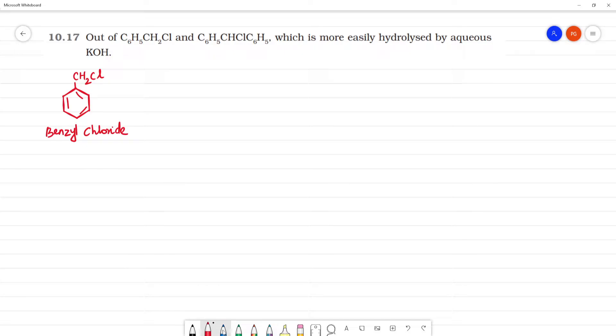Next, C6H5CHCl - here the carbon has one aryl group. Then we have an H and a Cl. So how do we classify this? This is primary aryl halide.